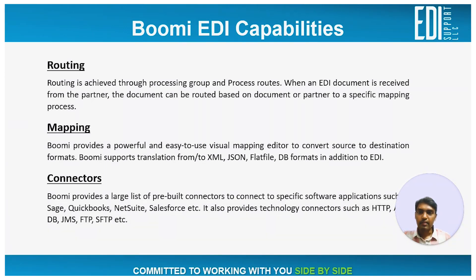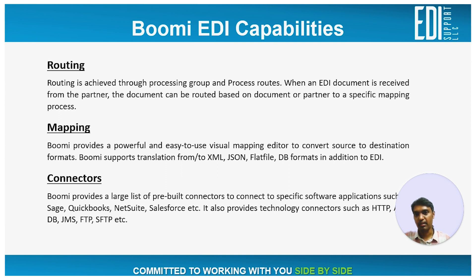Next comes the routing functionality. Routing is an important EDI processing functionality where an EDI document, when received from the partner, has to be routed to the right mapping process so that it is translated by the right map to be sent to the end system. Routing is achieved through two components: the processing group and the process routes. I'll show the processing group and process routes after going through the mapping functionality.